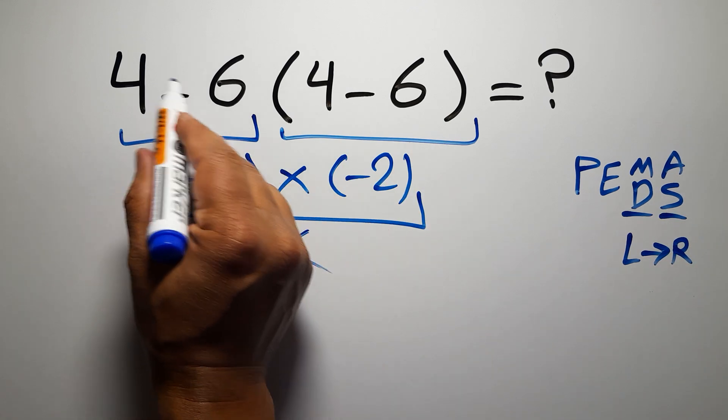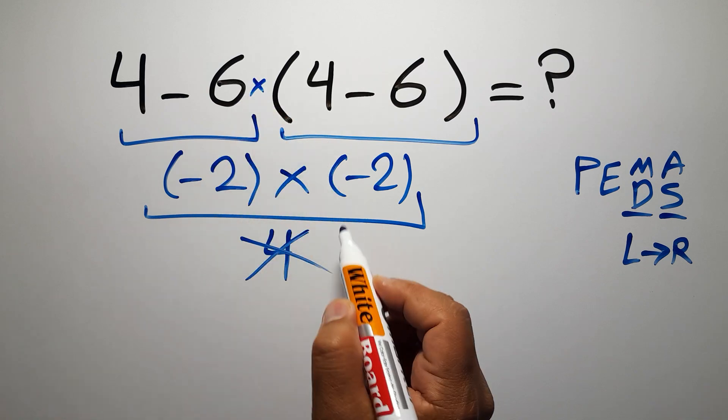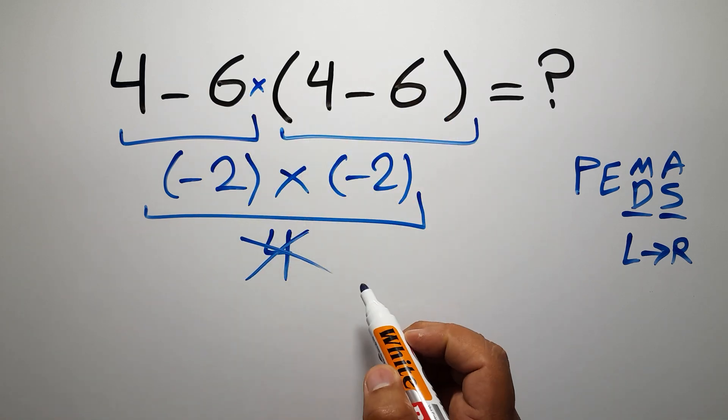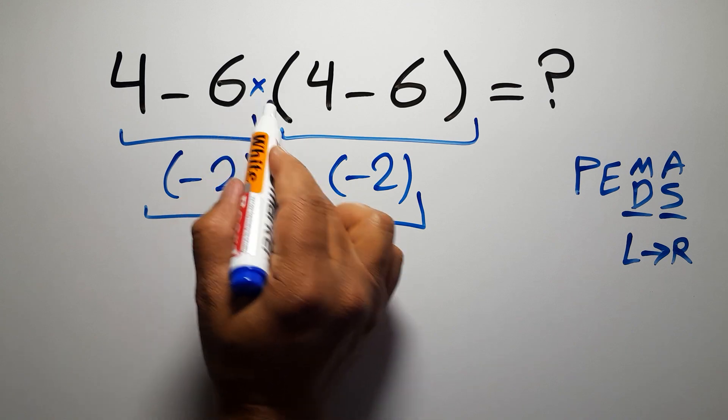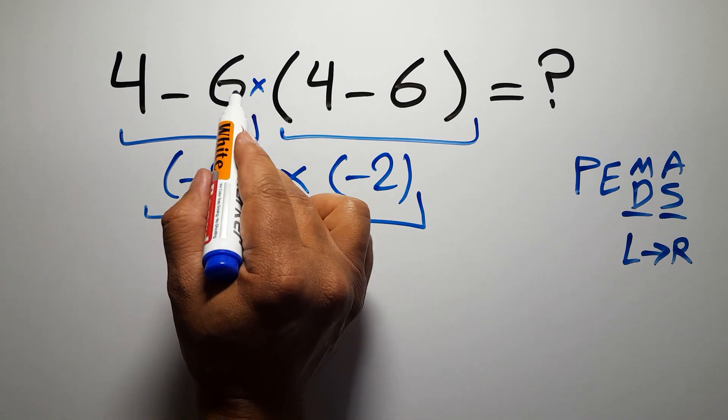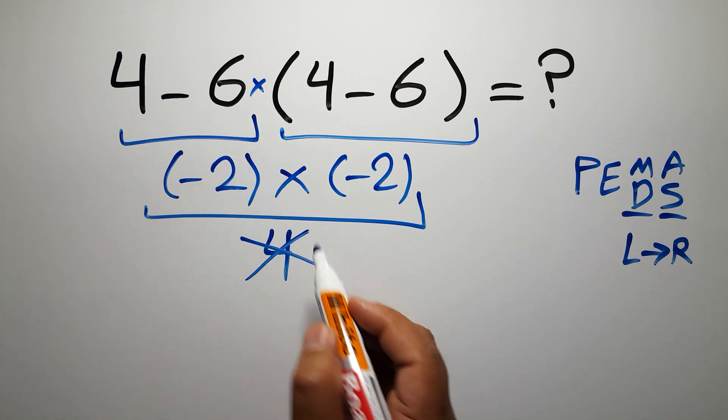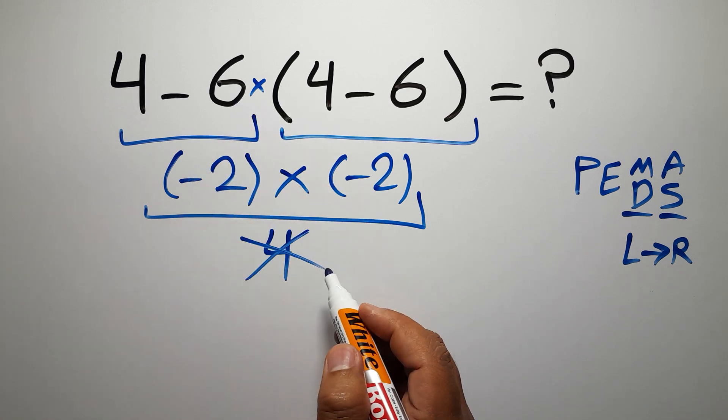In this expression, we have one subtraction, one multiplication, and one parenthesis. Inside these parentheses, we have one subtraction. Here we have a multiplication, because in mathematics, when a number is placed next to parenthesis, it means multiplication, and we usually don't write the multiplication sign for brevity.